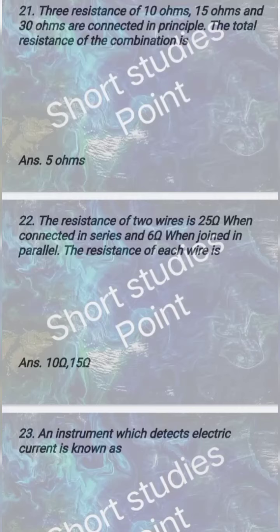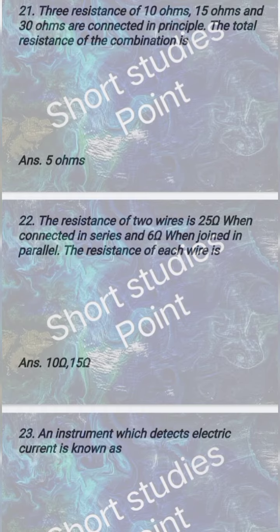Question 3: Three resistances of 10 ohms, 15 ohms and 30 ohms are connected in parallel. The total resistance of the combination is 5 ohm.